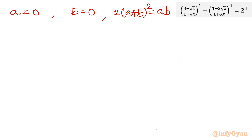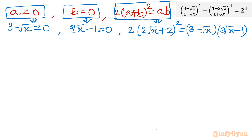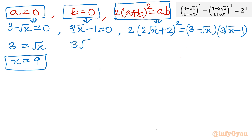For a equal to 0: since a is (3 minus root x), this gives root x equal to 3, so squaring both sides, x equals 9. For b equal to 0: since b is (3 root x minus 1), this gives 3 root x equal to 1, squaring both sides gives 9x equal to 1, so x equals 1 over 9. These are our first and second solutions.